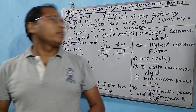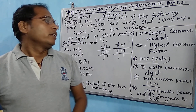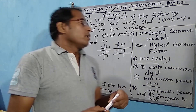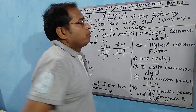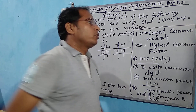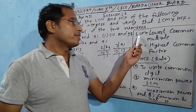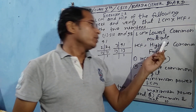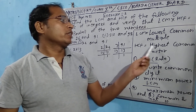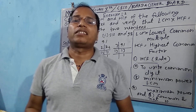First, we must learn what is LCM and how to find LCM and HCF. The full form of LCM is Lowest Common Multiple. The full form of HCF is Highest Common Factor, which is written in short as HCF.